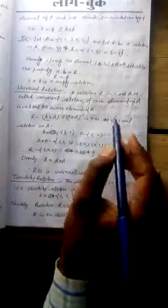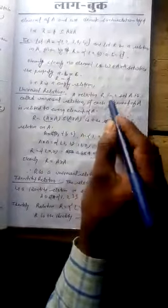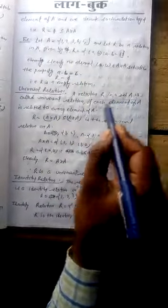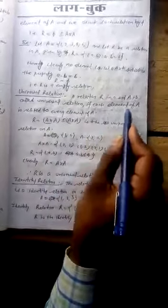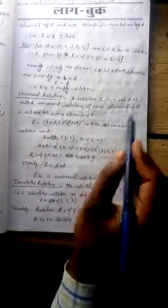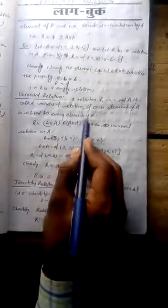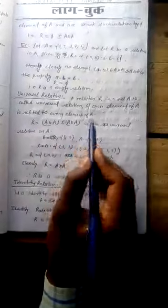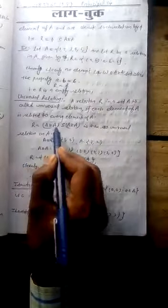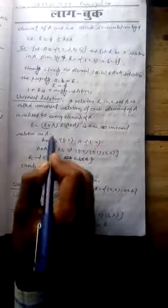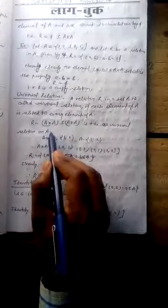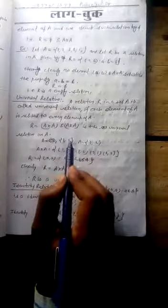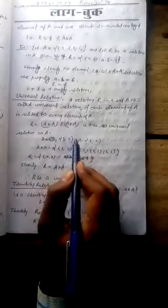Now universal relation. A relation R in a set A is called a universal relation if each element of A is related to every element of A. This means R = A×A. Since A×A is a subset of A×A, it is the universal relation on A — a relation that is equal to the entire A×A.